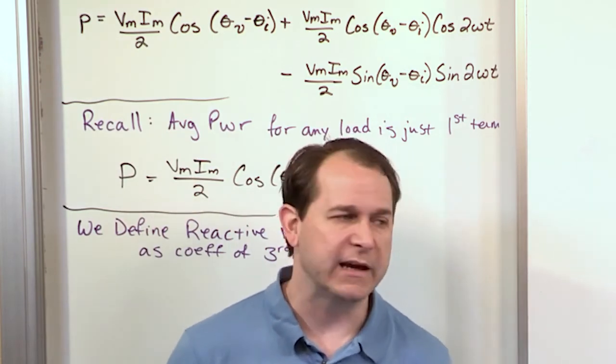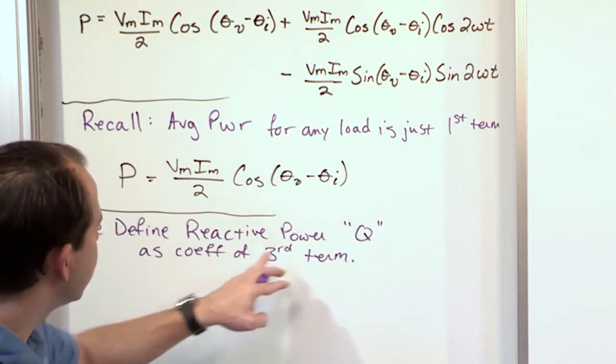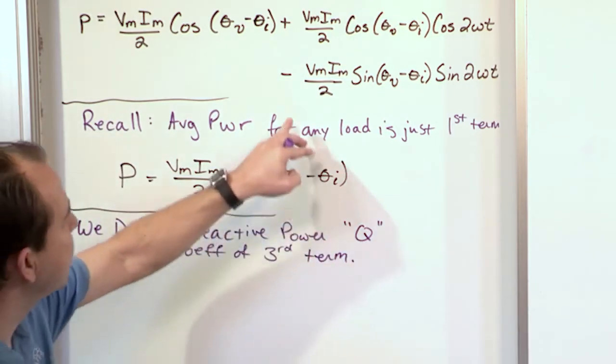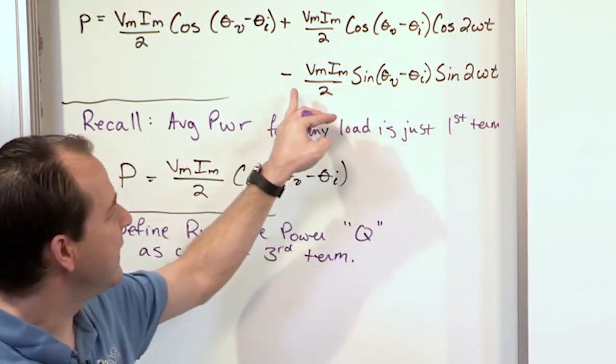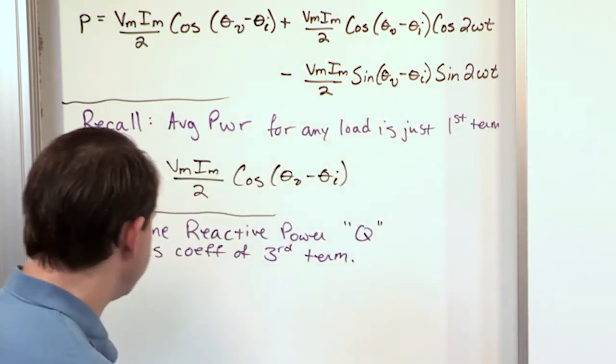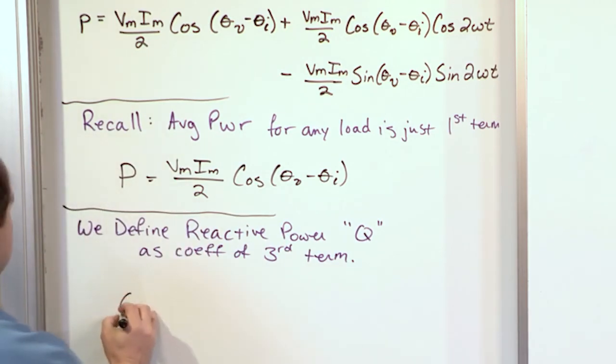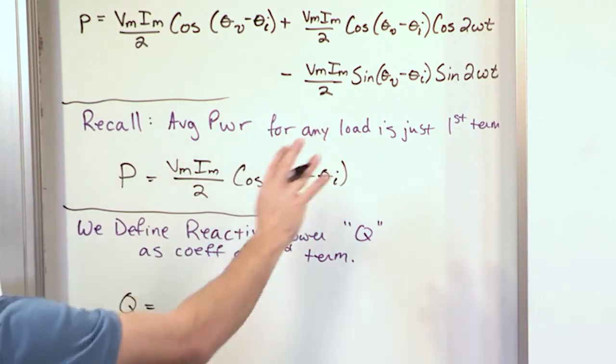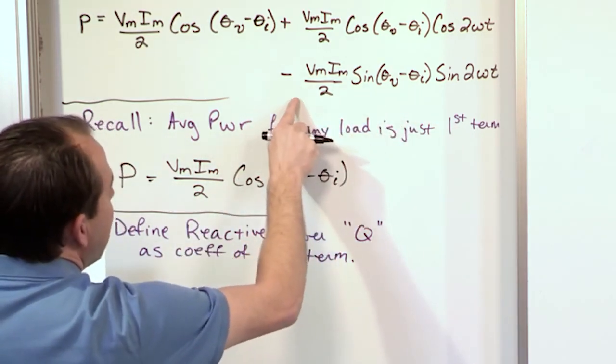We're going to define Q to be the coefficient of the third term. The reason we're defining it to be that coefficient of the third term—let me actually write it down before I tell you why. Q is going to be defined without the negative sign for now. You'll see why. When I say the coefficient, I'm talking about all of this.